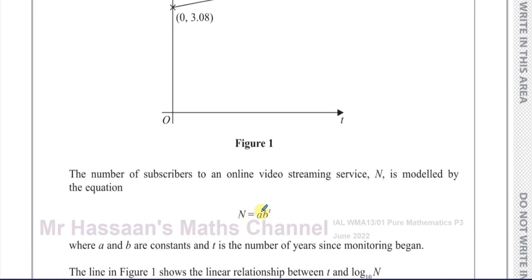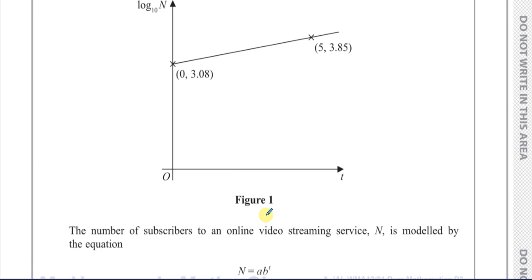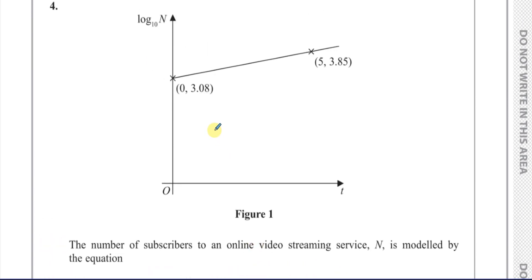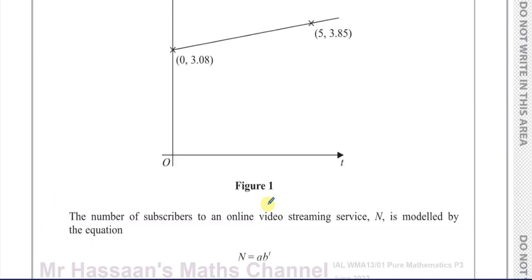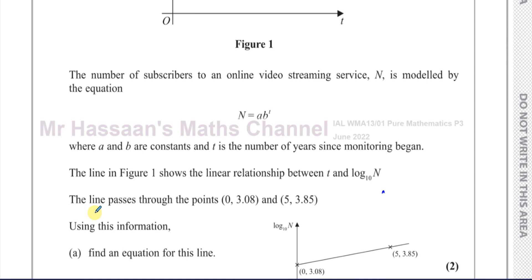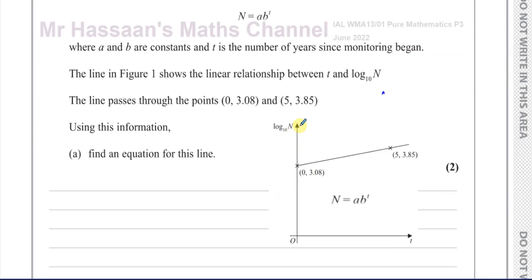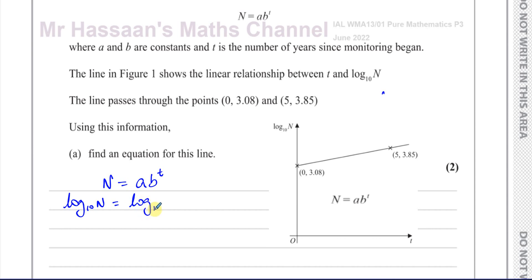This exponential equation — because there's a variable in the power — has been transformed into a linear equation by using log to the base 10 of N, taking logs of both sides. I chose log base 10 simply because the graph is expressed in terms of log base 10; if it said ln N, I would take the natural log of both sides.